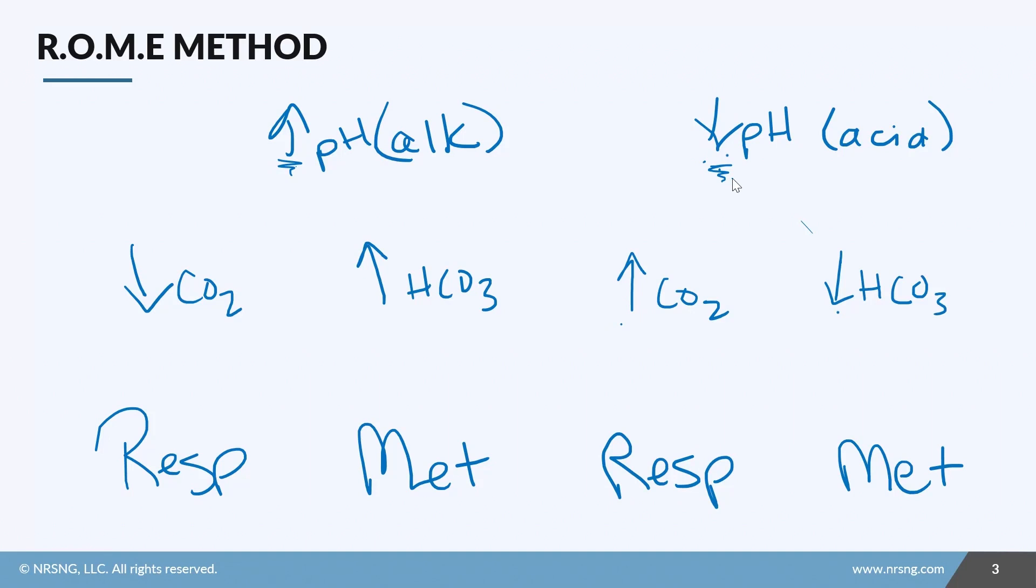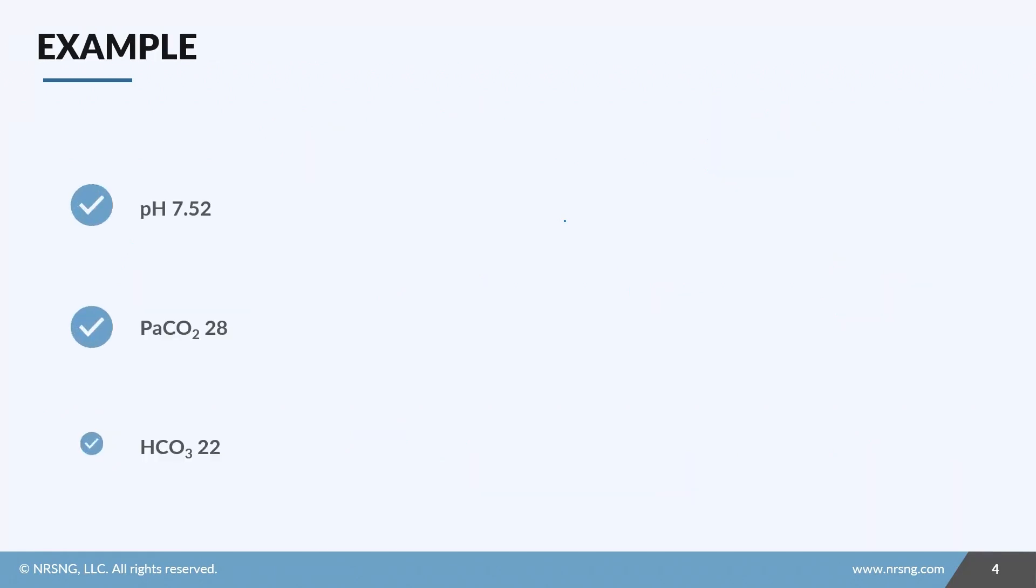So you can see again why some people call it the arrow method. So the best way to really see this is to put it in practice. So let's do some examples. Remember we always use our three steps. Step one is to evaluate each one. In this case we'll just use arrows—is it high or is it low?